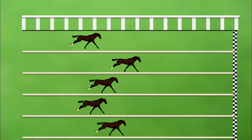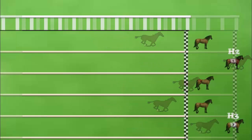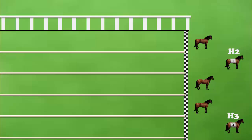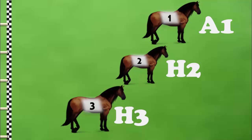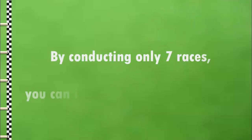Call them H2 and H3. So A1, H2, and H3 are the top three fastest out of 25 horses. This way, by conducting only seven races, you identified three fastest horses.